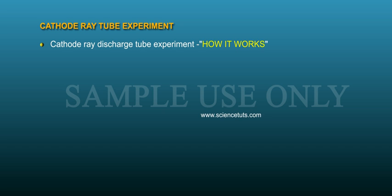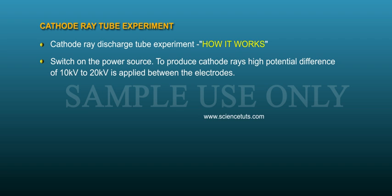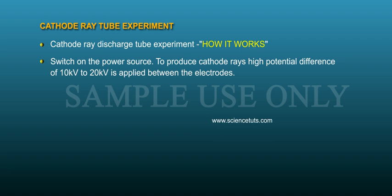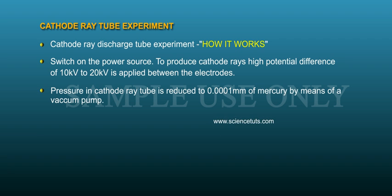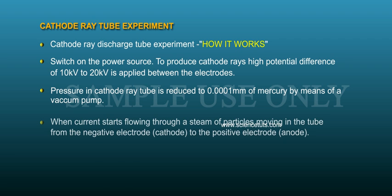Cathode ray discharge tube experiment — how it works: Switch on the power source. To produce cathode rays, a high potential difference of 10 kV to 20 kV is applied between the electrodes. The pressure in the cathode ray tube is reduced to 0.0001 mm of mercury by means of a vacuum pump.